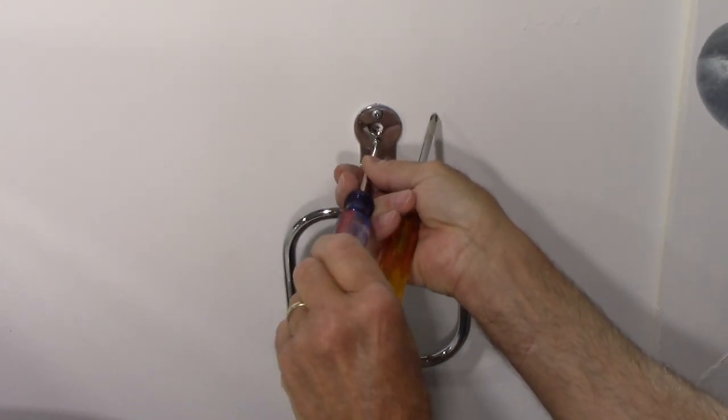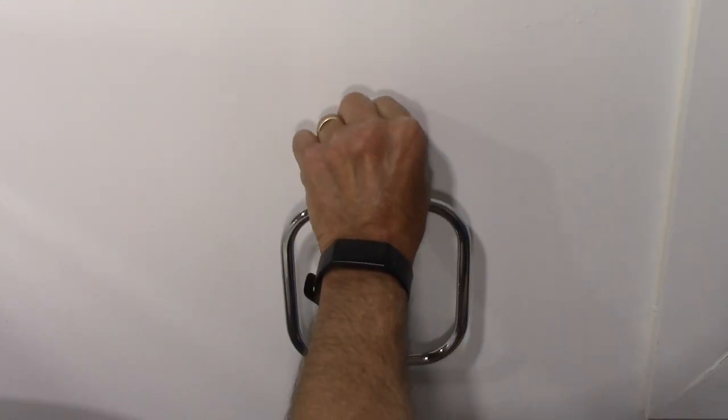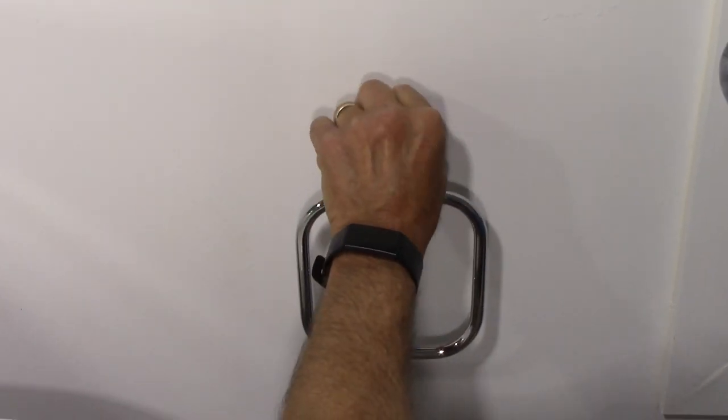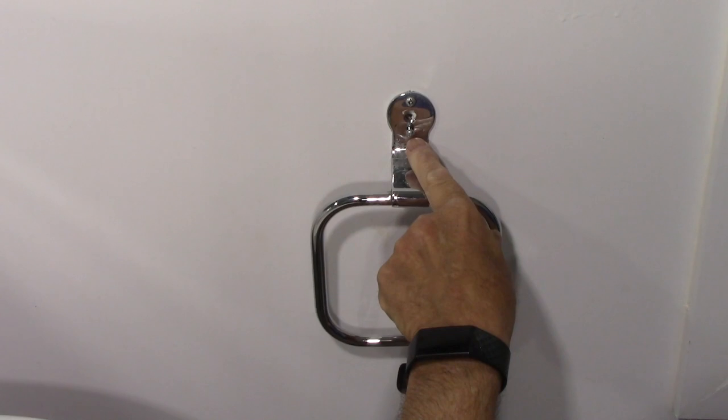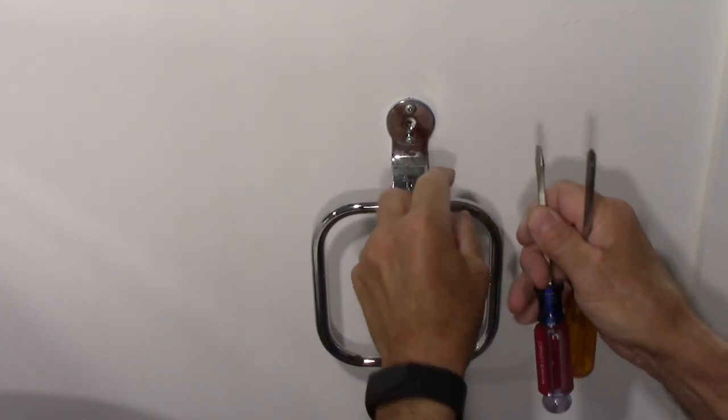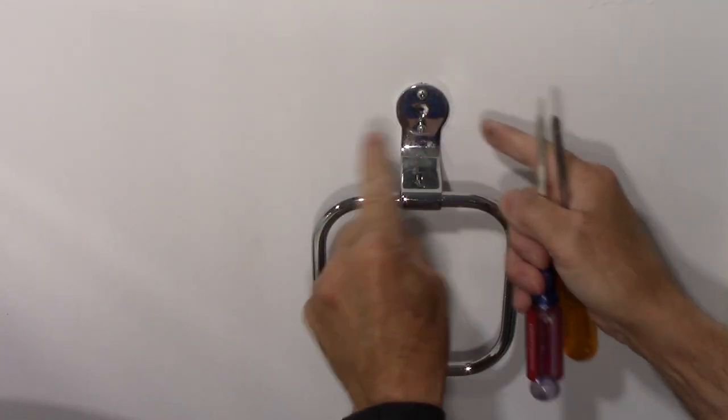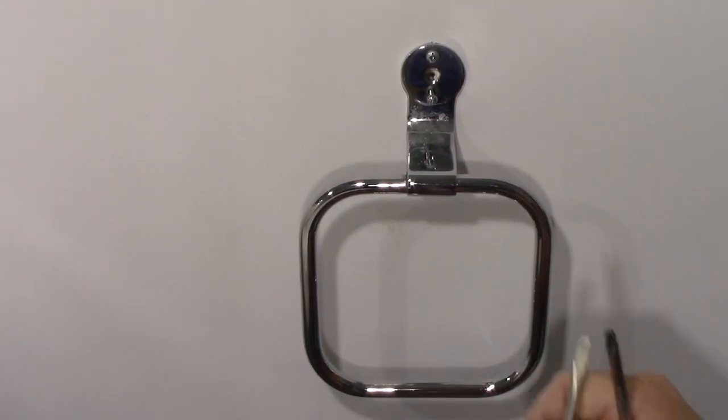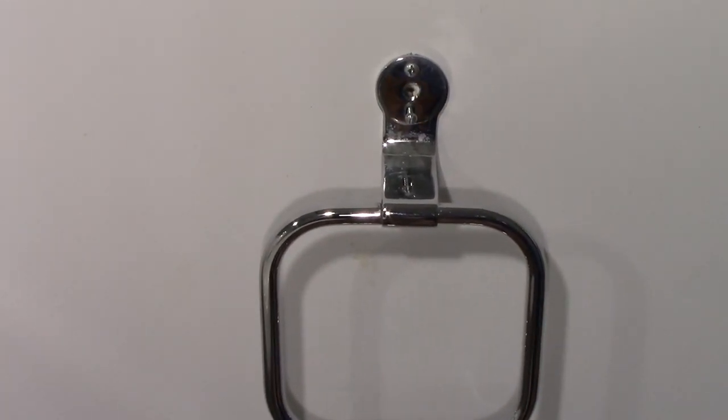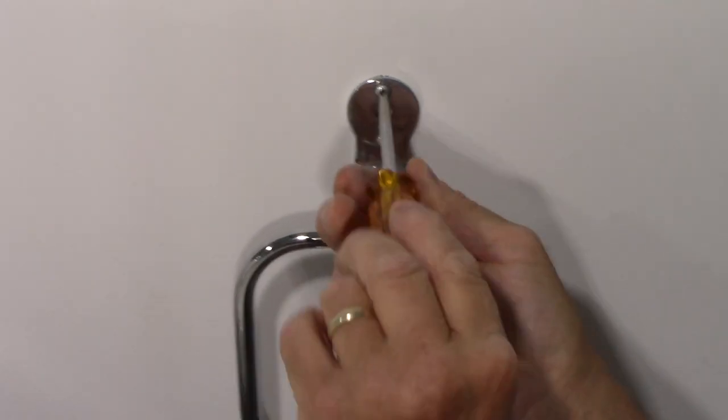Just by the way that this is coming out here, I can tell that somebody has a very large hole in this wall because this is what they call a toggle bolt. It goes into a very large hole and it opens up behind the sheetrock. So we are going to have a significant hole to repair here. But let's take this one out first.